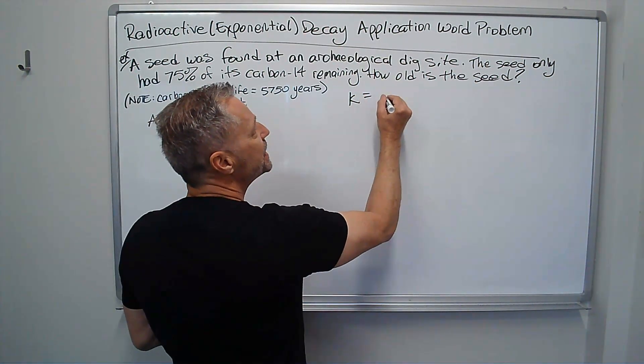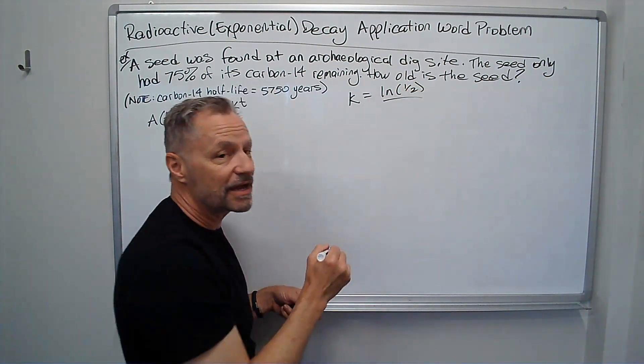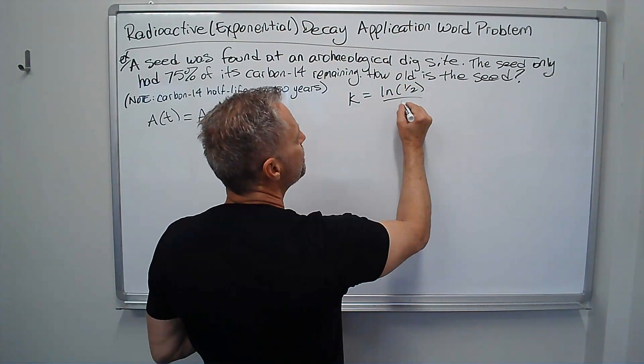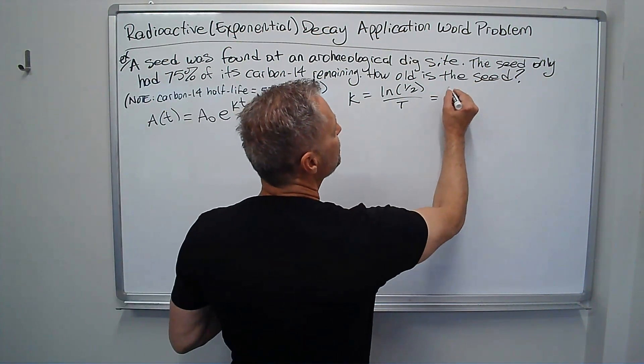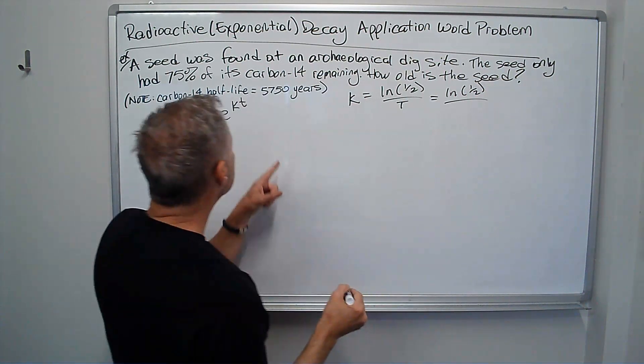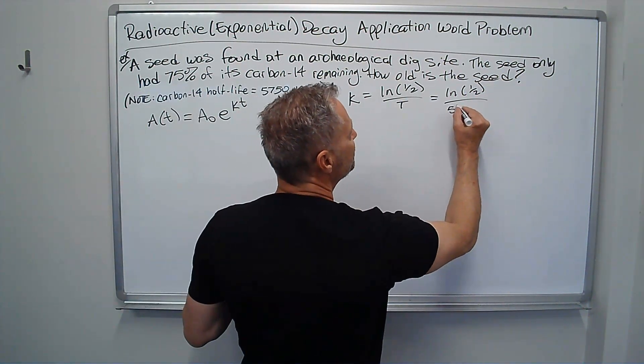And the growth rate is ln of a half, half-life, divided by t, where t is the time to half-life. So in this case, we're just going to say, oh, it's ln of a half divided by time, 5,750 years.